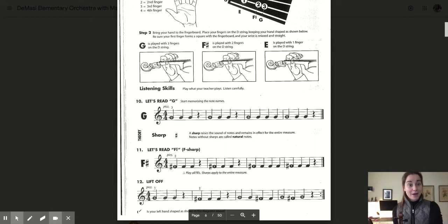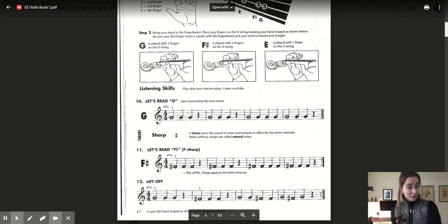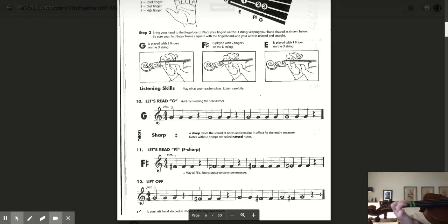And then lift off goes back and forth between G and F sharp. Having three fingers down, then lifting one up for two. Then three fingers down, then lifting one up for two.